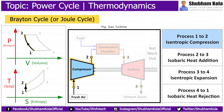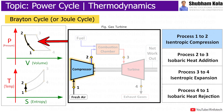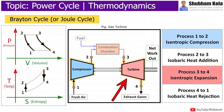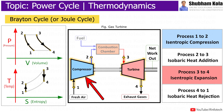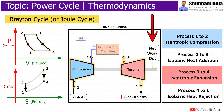During the Brayton cycle, work is done on the gas by the compressor between states 1 and 2 in the isentropic compression process, and work is done by the gas in the turbine between states 3 and 4 in the isentropic expansion process. The difference between the work done by the gas and the work done on the gas is the net work produced by the cycle, which corresponds to the area enclosed by the cycle curve in the PV diagram.